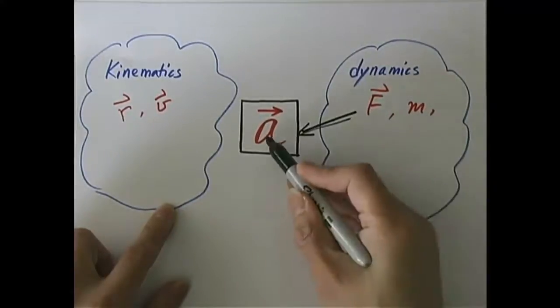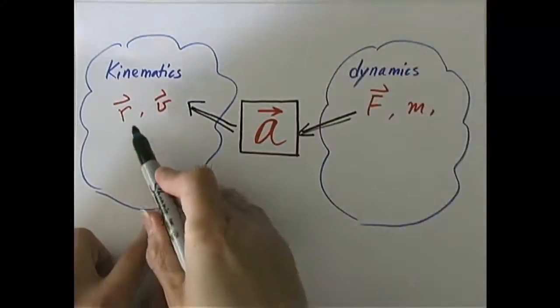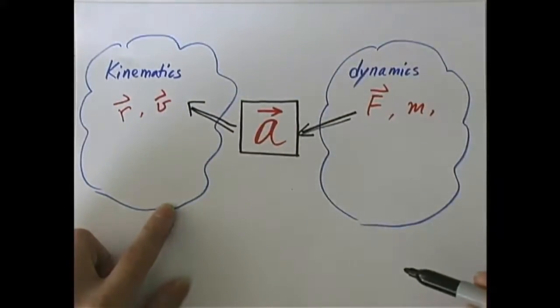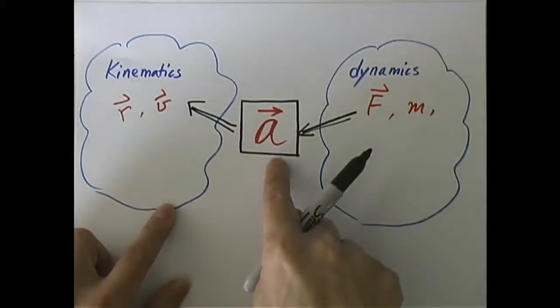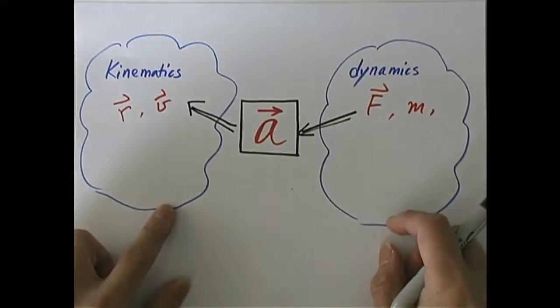From F, I can find A. And once I find A, I can go ahead and find R, V, anything I want, as far as describing the motion is concerned. That is why A plays a central role in connecting the dynamics and kinematics, two different branches of mechanics together.